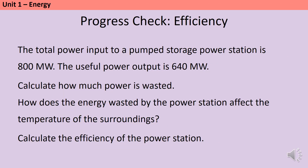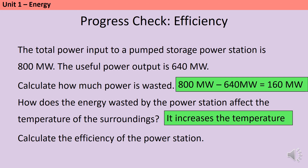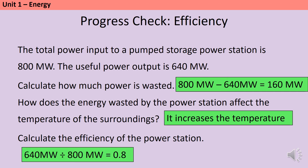Power stations are also a great opportunity to check your understanding about efficiency. If 800 megawatts of power are input to the power station and only 640 megawatts come out usefully, then the power wastage must be the difference — 160 megawatts. This wasted energy increases the temperature of the surroundings, and the efficiency will be 0.8, or 80%.